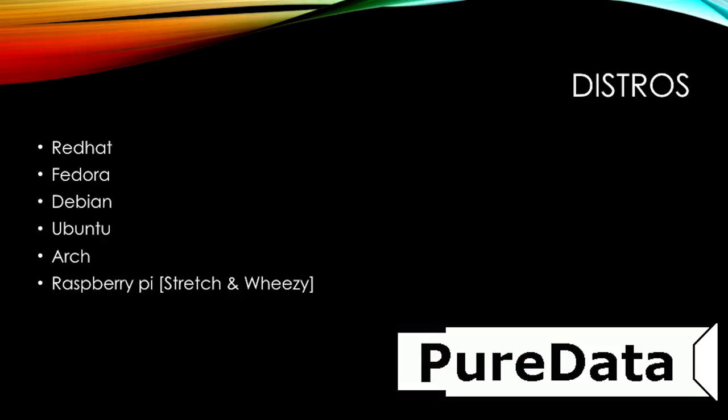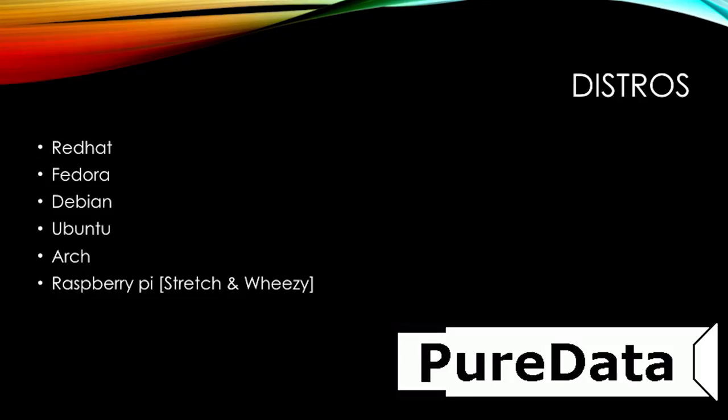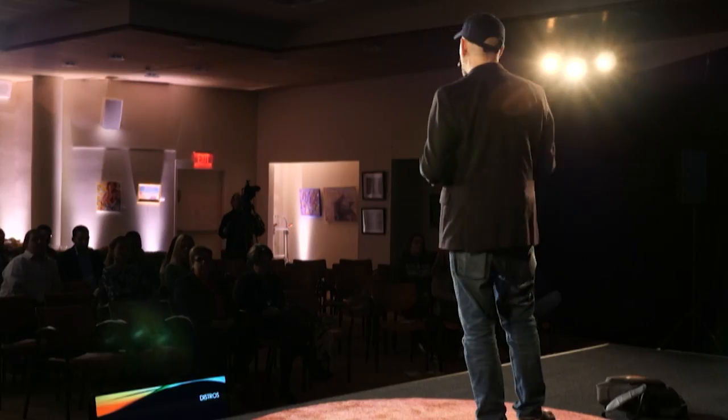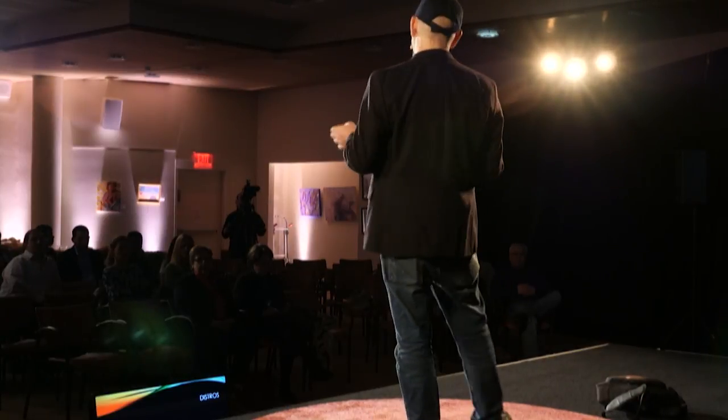Red Hat was scary and fun — it took about a week to get my sound card to work and two weeks to get the 28.8 modem working. Red Hat then became Fedora Core, then I got into Debian, then Ubuntu, then Raspberry Pi. About ten years ago a company in England released the Raspberry Pi, a micro-computer that fits in everything. The first thing I do with any new system is install Pure Data, because Pure Data works on Mac, Windows, Power PCs, Raspberry Pi, and if you really dig, you can even find a version for SGI.